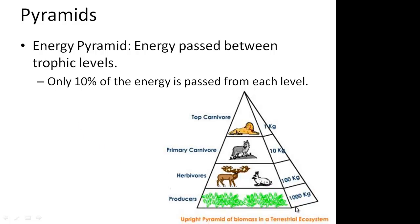So if our producers have 1,000 kilograms of energy, our herbivores only get 100 kilograms. Then, as we go up to our next level, our primary carnivores only now get 10 kilograms. And finally, our top carnivores only get 1 kilogram of the initial energy from the producers. So as you can see, the fewer steps in the food chain there are, the more energy each level will get.